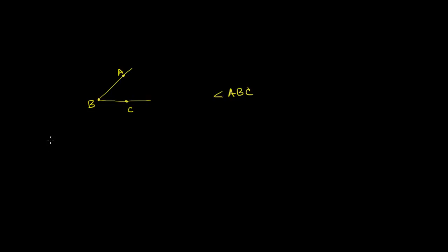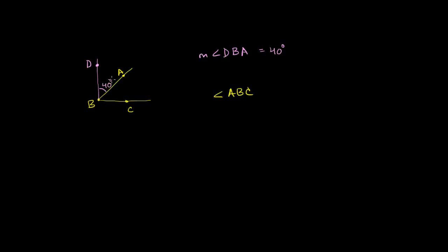And let's say that we have another angle called DBA — I want to have the vertex once again at B. So it looks like this, and this right over here is our point D. Let's say that we know that the measure of angle DBA is equal to 40 degrees. So this angle right over here has a measure of 40 degrees.